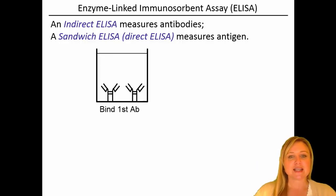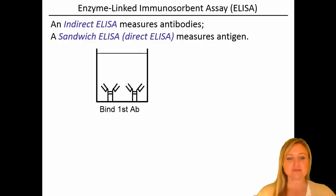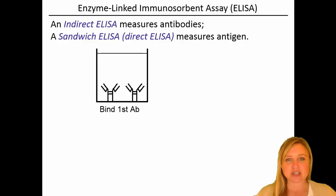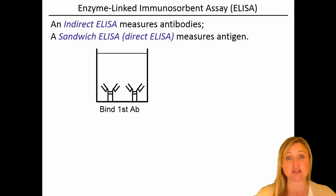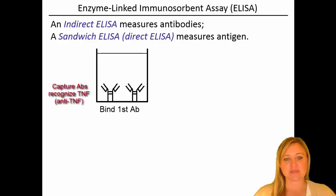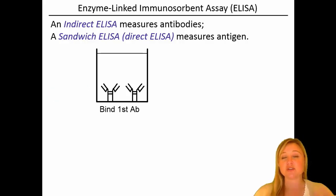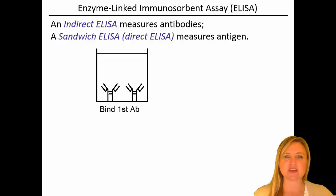So if we're going to detect an antigen, instead of binding an antigen into the ELISA well, we bind antibodies — we call these our capture antibodies. We bind our capture antibodies, and this specifies what the ELISA is going to measure. For example, if we're looking for TNF in a patient with rheumatoid arthritis, we bind anti-TNF capture antibodies to the plate, allow time for binding, rinse, and then block the plate so there's no nonspecific binding of the patient sample.